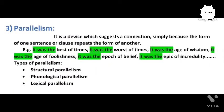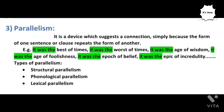The third formal link or cohesive device is called parallelism. It is another link within discourse which is effected by parallelism — a device which suggests a connection simply because the form of one sentence or clause repeats the form of another. This is often used in speeches, prayers, poetry, and advertisements, where a form is repeated again and again in order to achieve cohesion.